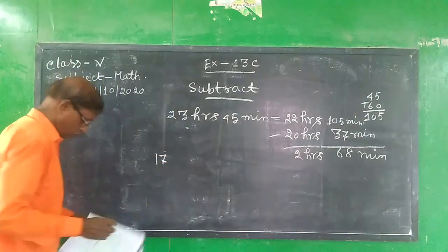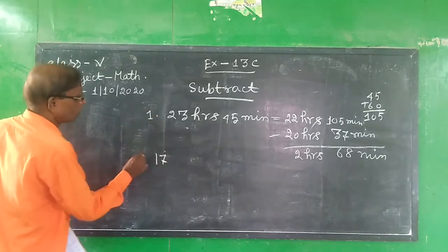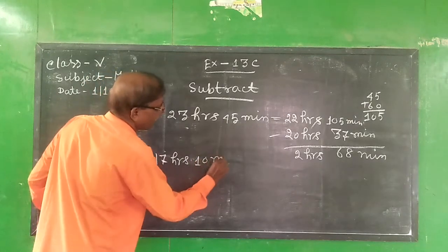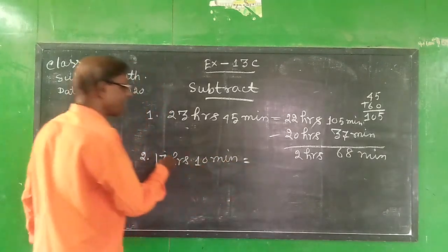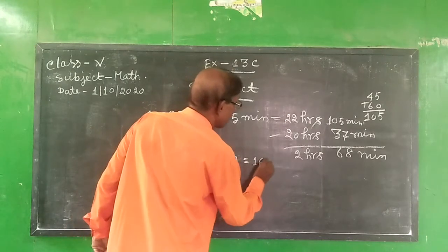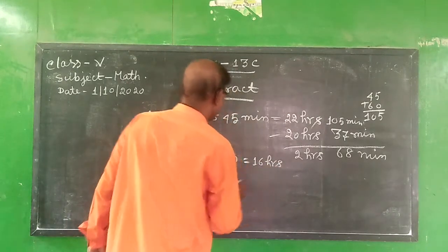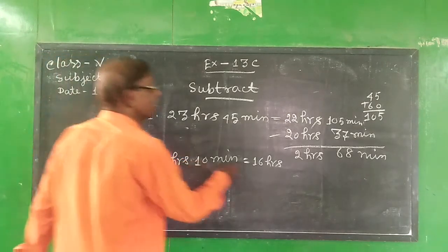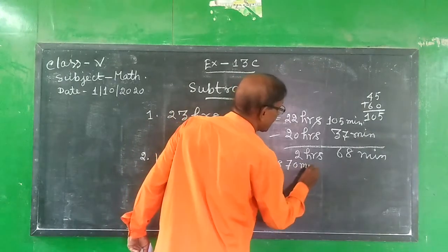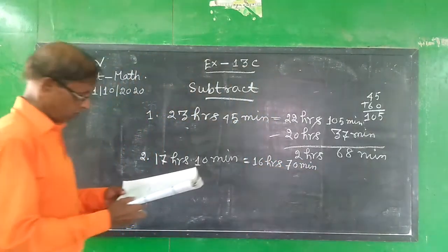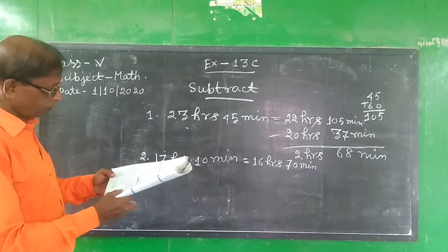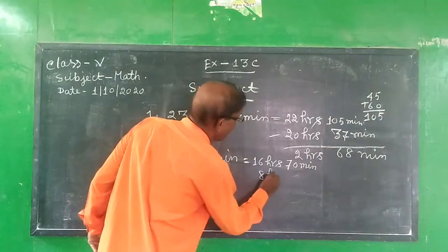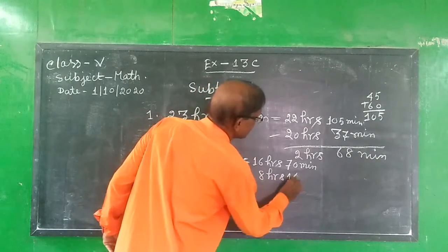17 hours, 10 minutes. We can write this as 16 hours, 70 minutes. And subtract 8 hours, 16 minutes.